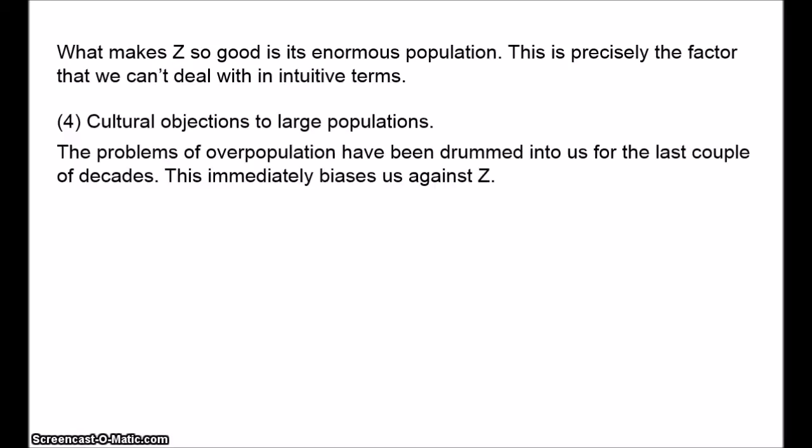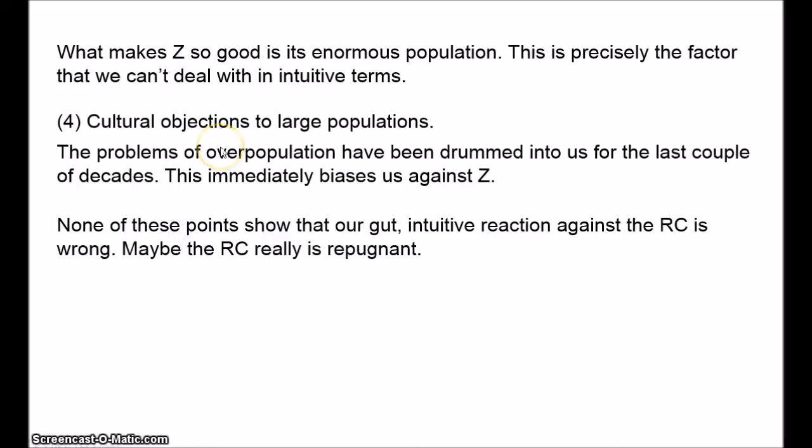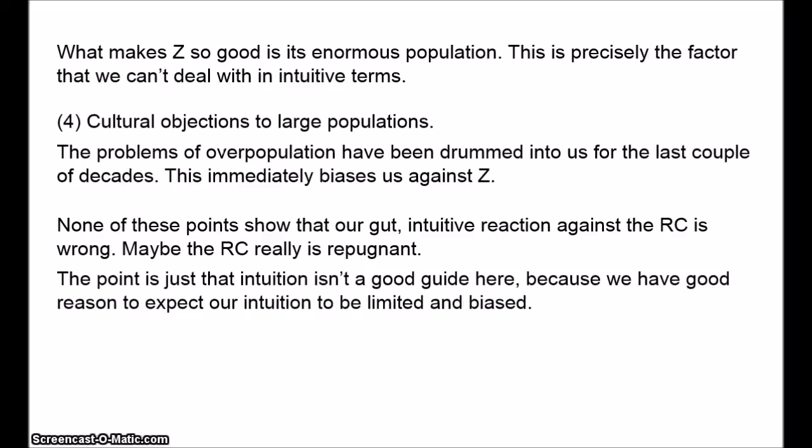We, in our culture, have a bias against very large populations. And this bias will infect our intuitive reactions. Even if we're explicitly putting the practical problems to one side. Rationally and intellectually, we know that it shouldn't affect our reaction. But it just does. We can't help it. Now, bear in mind that none of these four points is supposed to show that our intuitive gut reaction against the repugnant conclusion is wrong. Rather, it gives us a reason to be agnostic. Maybe the repugnant conclusion really is repugnant. Maybe our gut reaction gets it right. The point here is that our gut reaction, our intuition, can't be a good guide because we should expect our intuitions to be limited and biased. So, that gives us some reason to be skeptical of our intuition against the repugnant conclusion. That should help make the repugnant conclusion seem more acceptable.